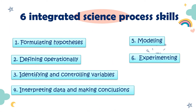Now let's go to the eight integrated science process skills. Number one: formulating hypothesis. Number two: defining operationally. Number three: identifying and controlling variables. Number four: interpreting data and making conclusions. Number five: modeling. Number six: experimenting.